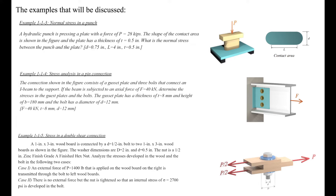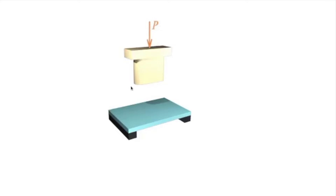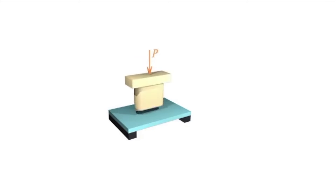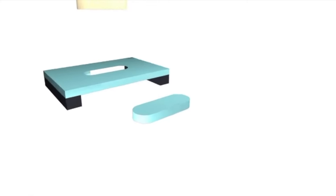Now let's review some examples to better understand various types of stresses developed in structures. The first example is a punch problem. The stress developed between the punch and the plate is a bearing stress because it is developed between two separate bodies. In addition, another stress is developed when the hydraulic punch presses the plate and makes a slot — the plate is sheared along its thickness, and because the force is parallel to the cross-section area, it produces shear stress.